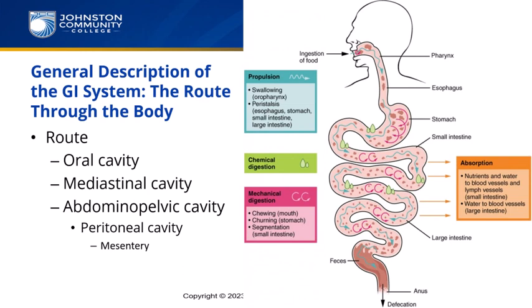The digestive system begins with the mouth and ends with the anus, traveling through a number of body cavities. The system begins with food entering the oral cavity, proceeding down the throat to the esophagus through the mediastinal cavity and onto the abdominal pelvic cavity. The stomach and intestines lie within the peritoneal cavity and are attached to the body wall by a vascular network of tissue called the mesentery. The extensive blood supply is necessary to absorb nutrients and route them through the cells.